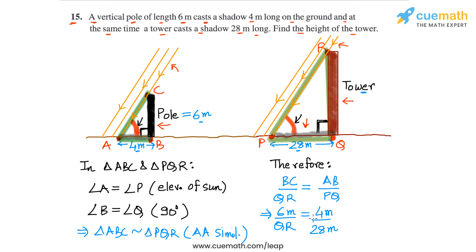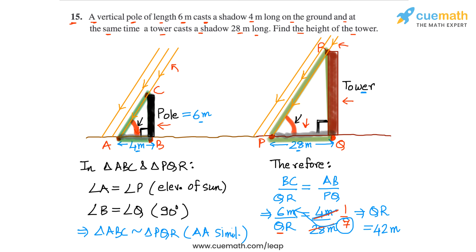So 4 over 28 simplifies to 1 over 7. Cross-multiplying gives QR = 7 × 6 = 42 meters. The height of the tower is 42 meters — this is what we had to find. That completes question 15.